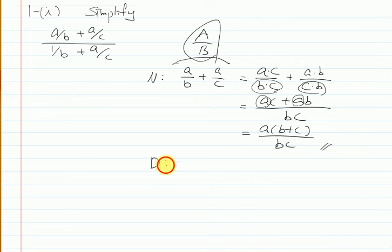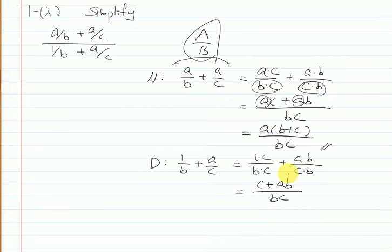So let's do the denominator. 1 over b plus a over c. Then same technique. What do we need to get the same denominator? c for the first term and b for the second term, right? bc and c plus ab, right? At this moment, the numerator, you cannot have any more factorization, right? This totally looks different. So that's it.